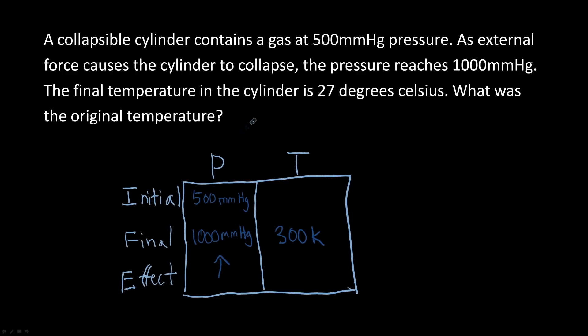Let's put in the table what we know. We started at 500 mmHg pressure, then increased to 1000 mmHg. The final temperature was 27 degrees Celsius, which is 300 Kelvin (300K - 273 = 27°C).